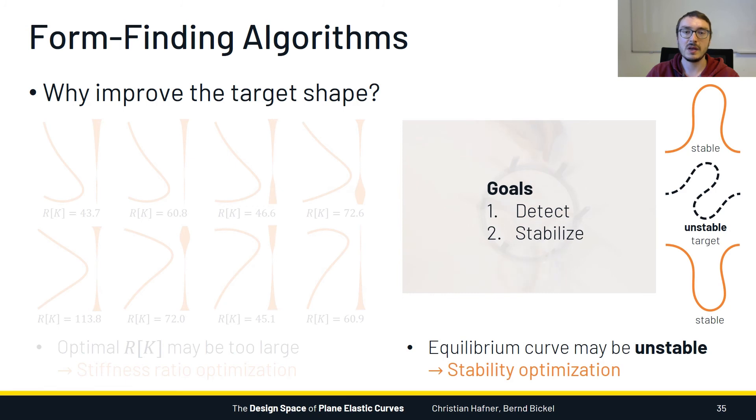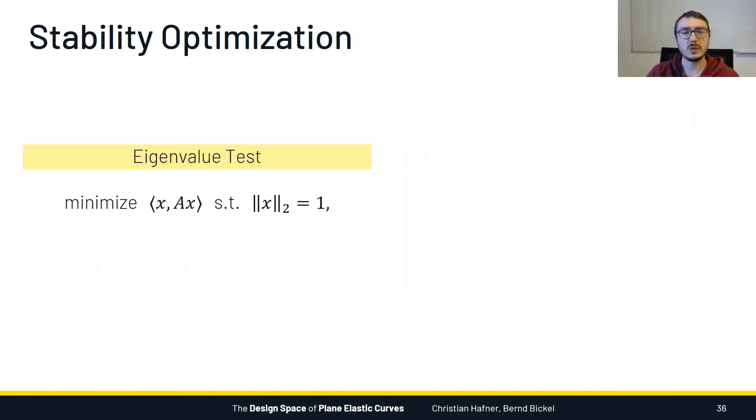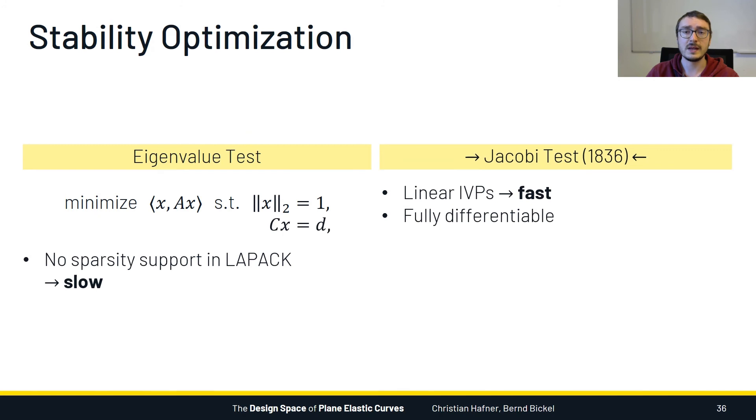So how do we detect unstable equilibria? The most common method is the eigenvalue test, for which we need to compute the minimal eigenvalue of a matrix and check whether it is negative. But our particular choice of boundary conditions adds linear constraints to this test, and currently numerical packages don't support sparsity-preserving algorithms for this type of problem, which makes it slow. This is why we use a different test, originally devised by Jacoby. Its outcome is completely equivalent to that of the eigenvalue test, but surprisingly, it can be performed just by integrating a few linear initial value problems, which makes it very fast. Every step of this test is also differentiable.